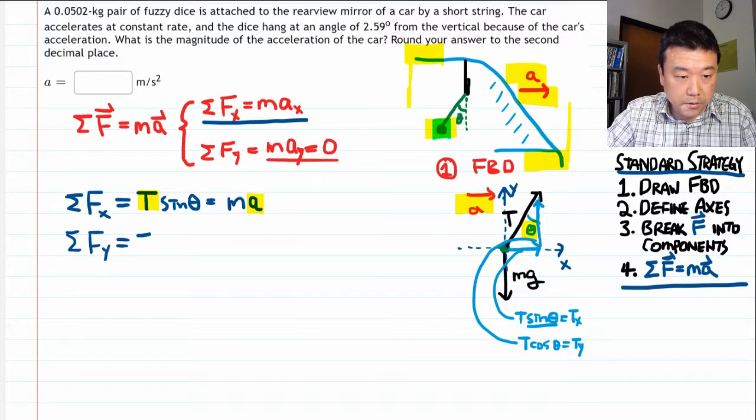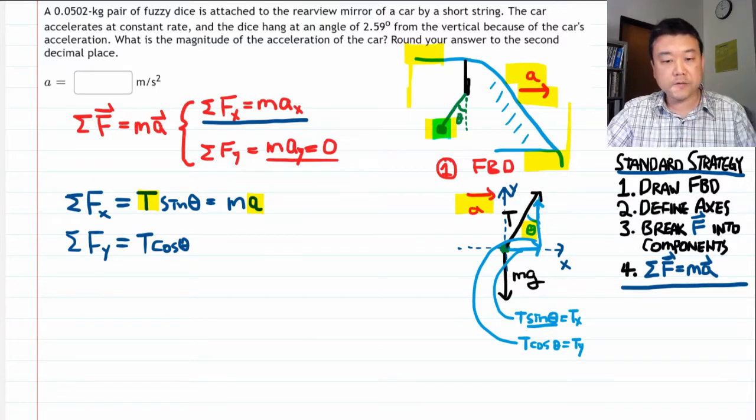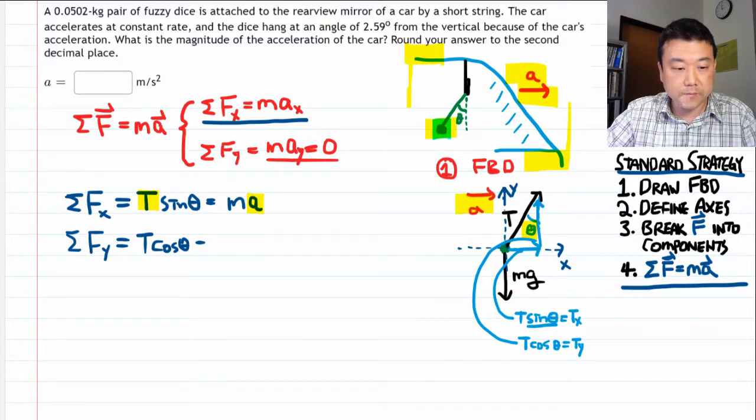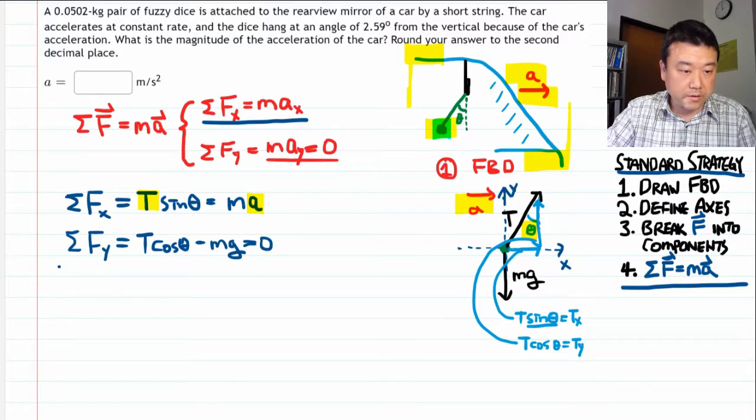is equal to... I have two forces. The y component of the tension force, T cosine theta, that's upward, called positive, minus mg, gravity, is equal to zero. So this is the end of the standard strategy.